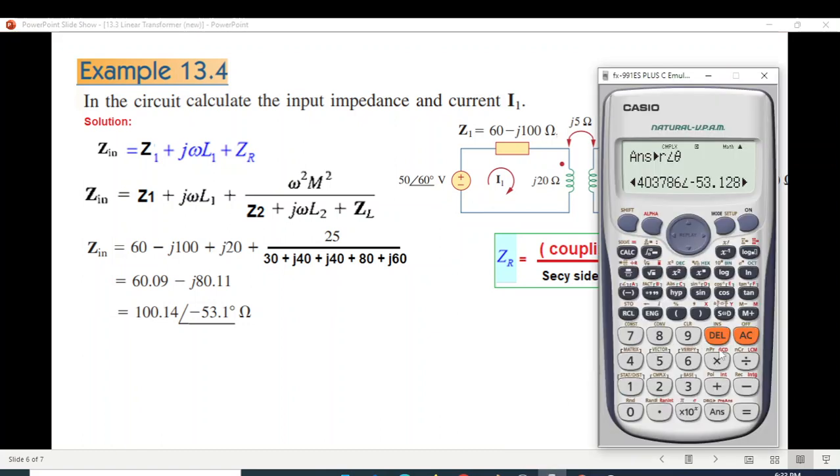We will solve it in complex mode on the calculator. Make sure you have selected complex mode, then press 2 for complex. Then enter the values. 60 minus j100, so minus 100 I. Press the A button. Plus j20, so plus 20 I. It is in fraction form, so use the A button for fractions.